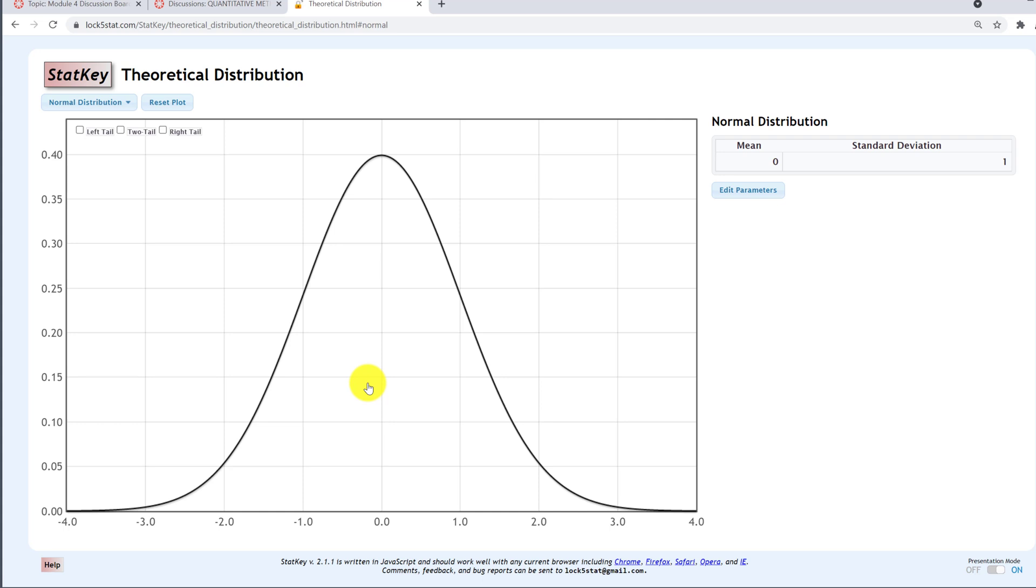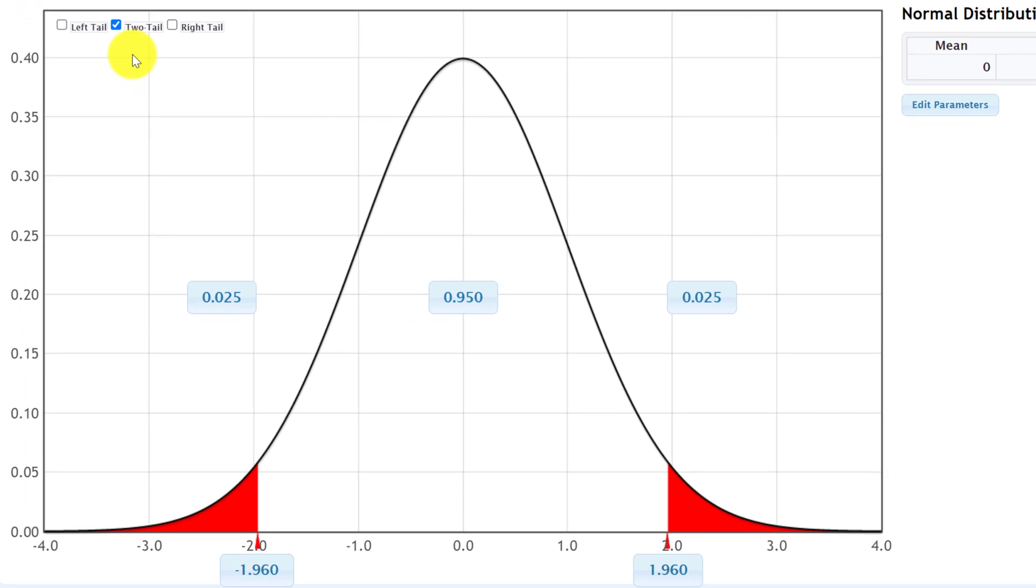And that 5% is going to be split equally between the left and the right tails. When I select two tail, the default is a 0.05 alpha level. So we have 95% in the middle and 5% split equally between the left and right tails with 2.5% on the left and 2.5% on the right. Our Z critical values are here at the bottom, plus and minus 1.960.